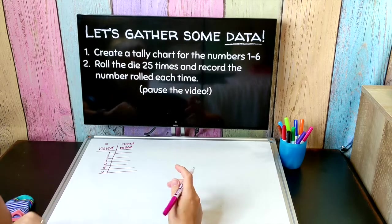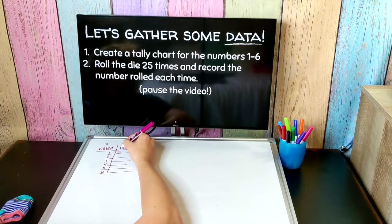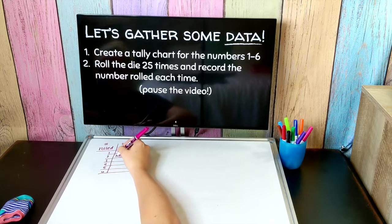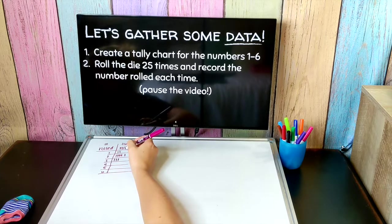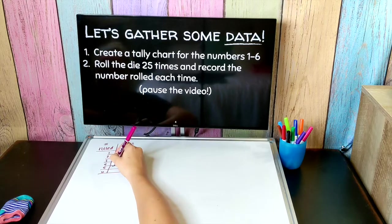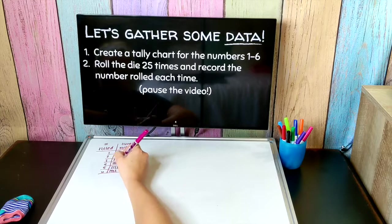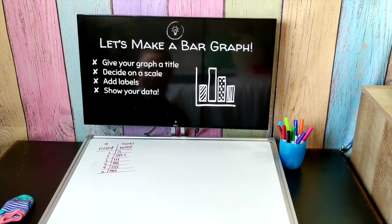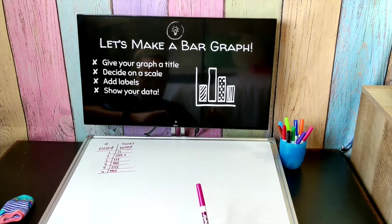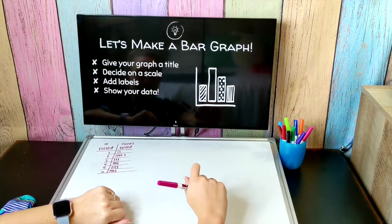So I got the number one twice, I got the number two six times, the number three I got three times, ironically number four I got five times, the number five I got four times, and the number six I got five times. Your data may look different than mine and that's okay. I'm going to walk you through the process for taking this data and turning it into a bar graph, and then you can do the same with the data that you generated.